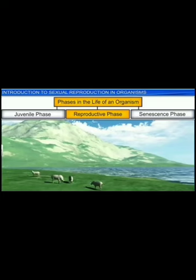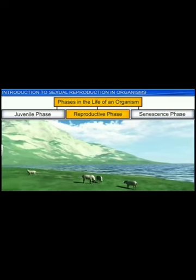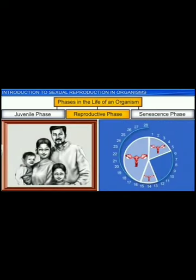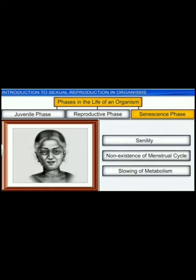Breeding during spring allows for the birth of lambs at an optimal time — that is, when the weather is warm and there is plenty of grass and water available in nature. In human beings, on the other hand, females experience the menstrual cycle and are active throughout their reproductive phase; they are therefore called continuous breeders. The end of the reproductive phase in living organisms coincides with the beginning of the senescent phase, during which we see changes such as senility, non-existence of the menstrual or estrus cycle, and slowing of metabolism. Senescence ultimately leads to death.